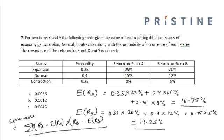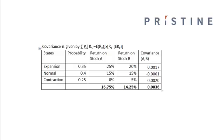If we do the calculation for this problem, these are the values which we get. The return on stock A, the average expected return, is 16.75%. Similarly, for stock B it is 14.25%. When we calculate the covariance for each state using this formula and add up the entire covariance for all three states, we get the value of covariance as 0.0036.